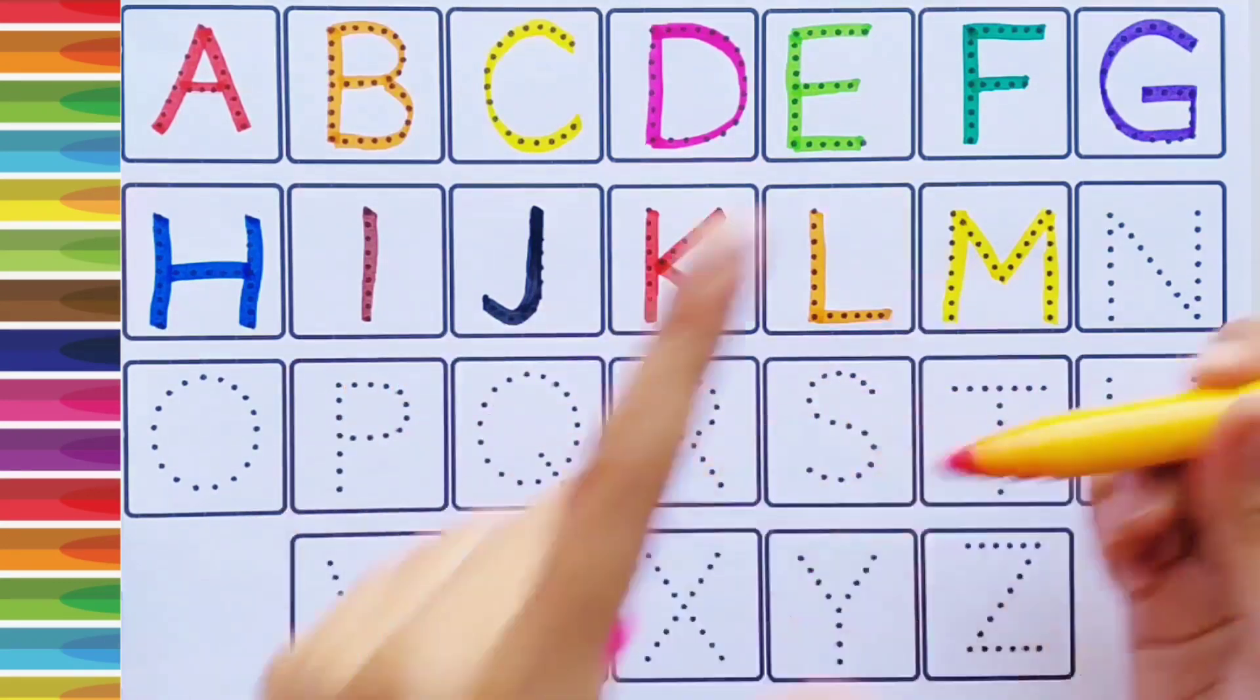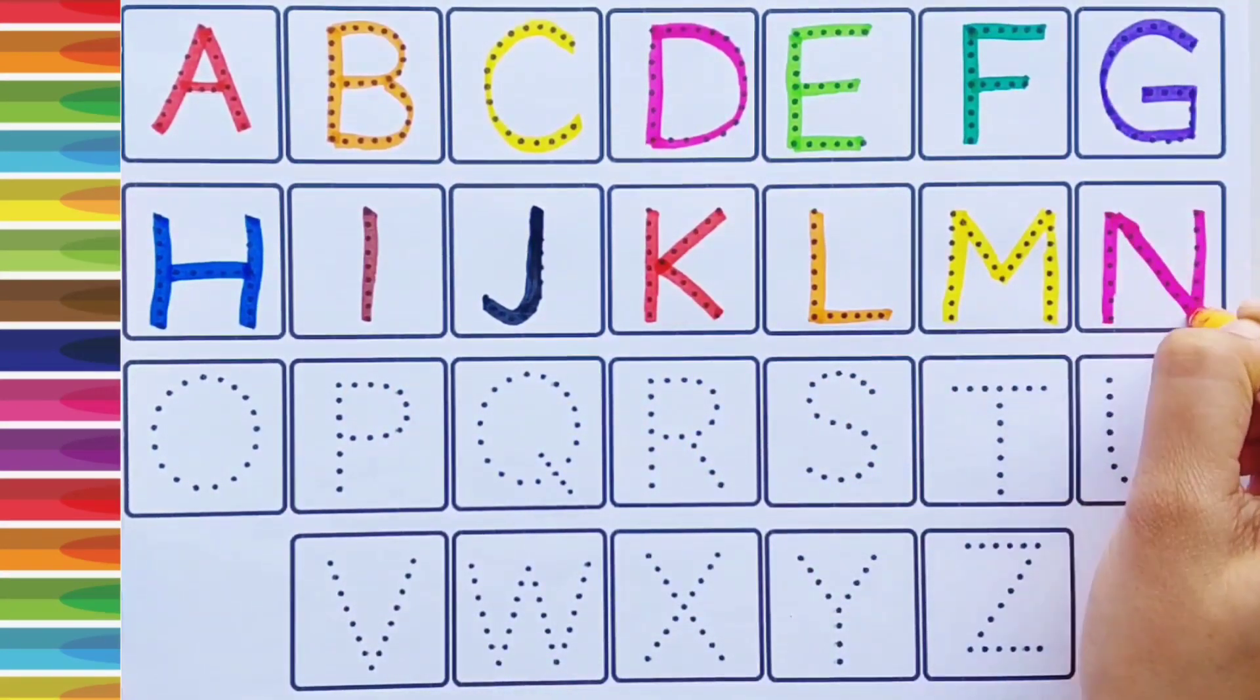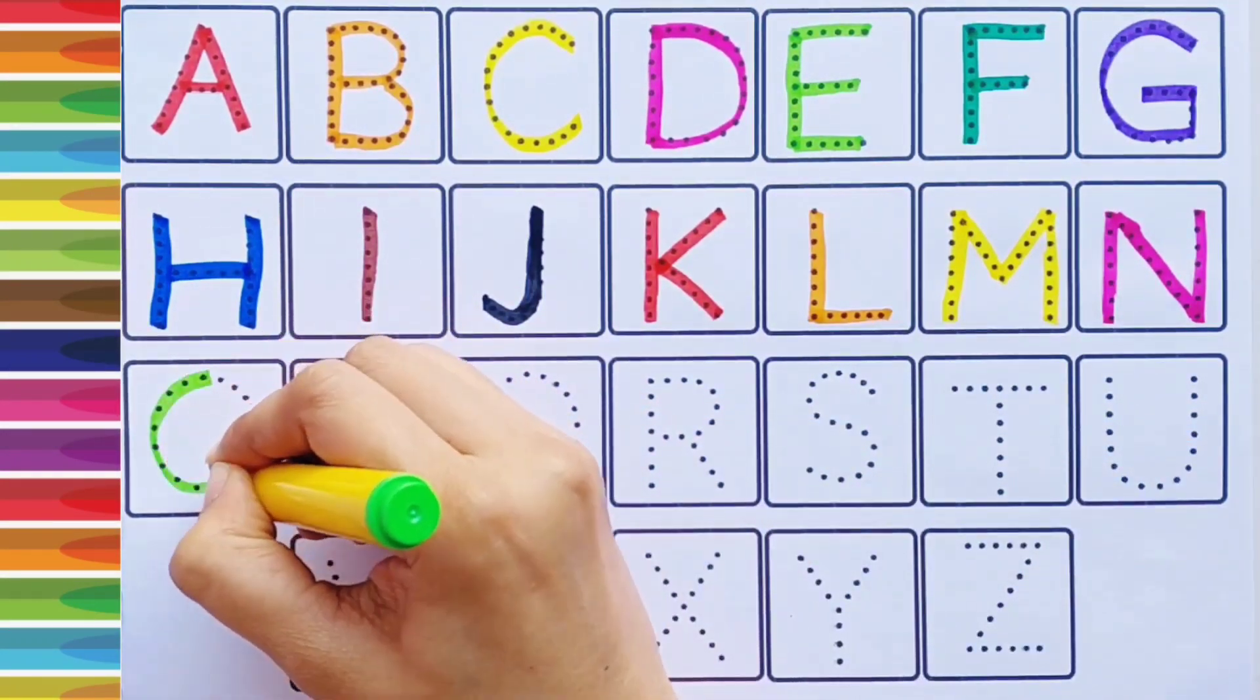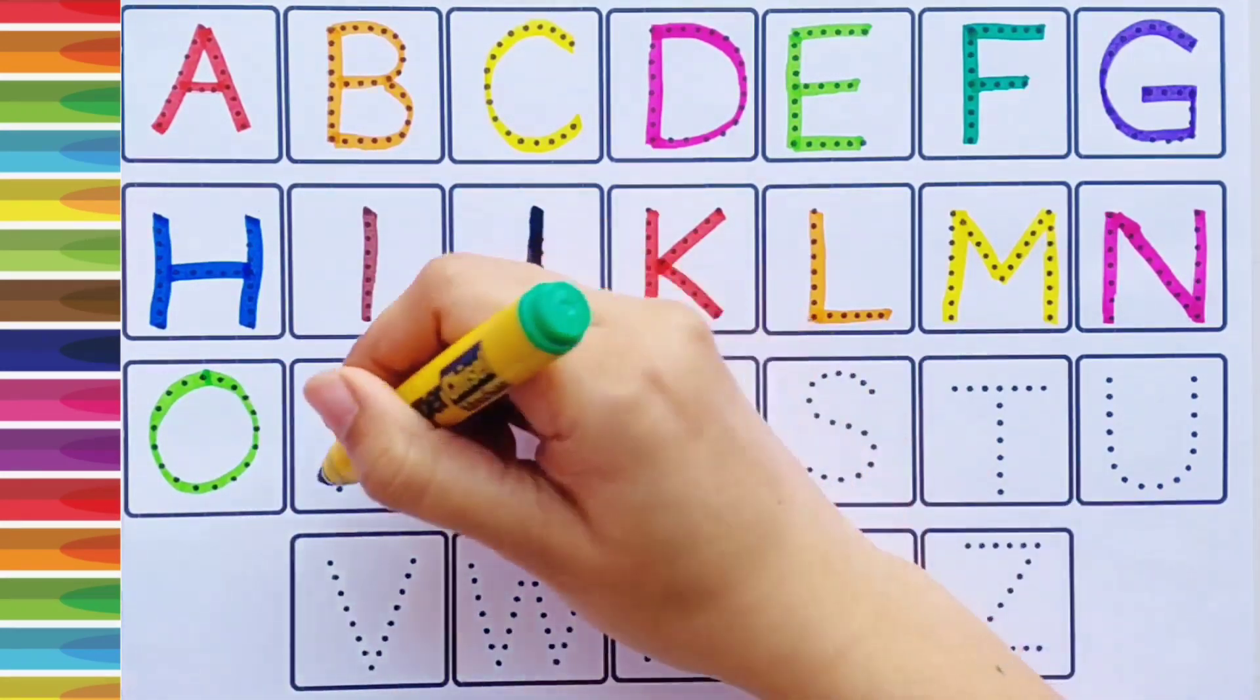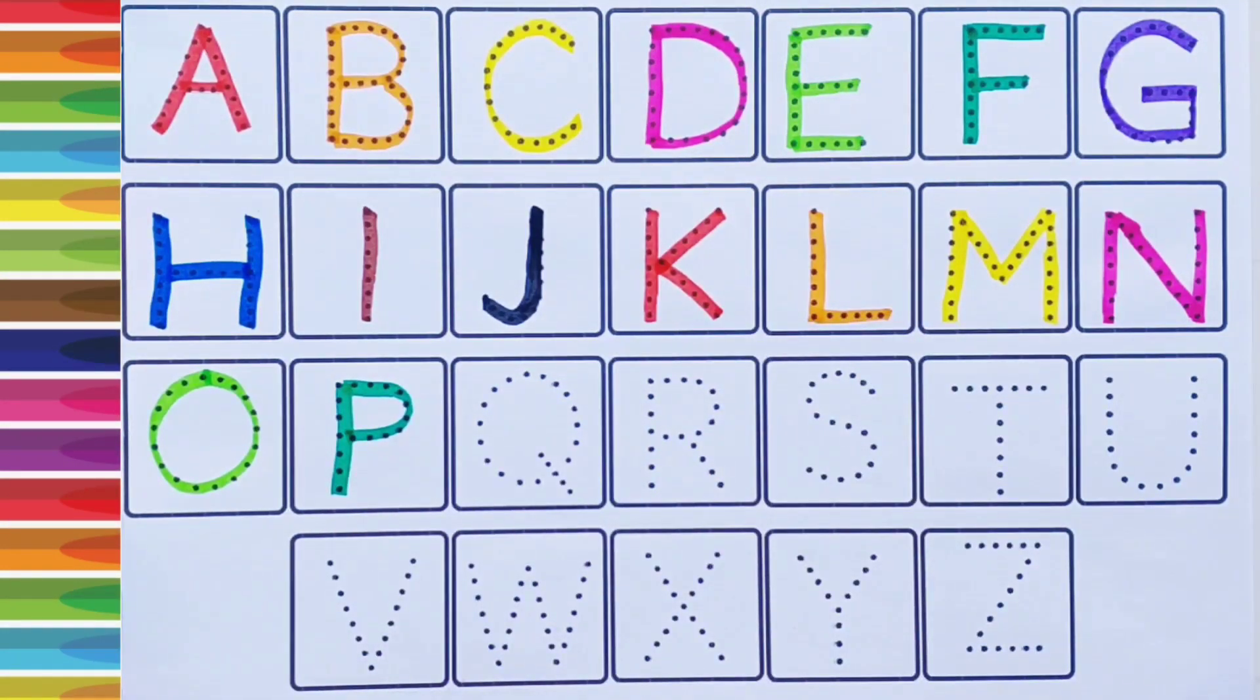pink color. N, N for nest, light green color. O, O for owl, green color. P, P for peacock,